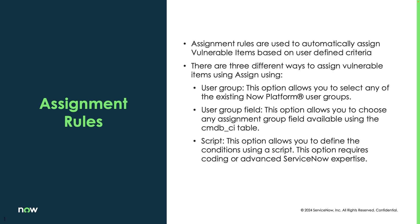The second assignment rule type uses a user group field, usually to grab an assignment group off the CI record, allowing you to use whatever values are in that field. The last type is a script, which lets you write more complex assignment logic using whatever values you want.